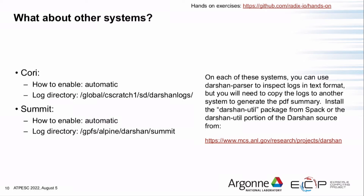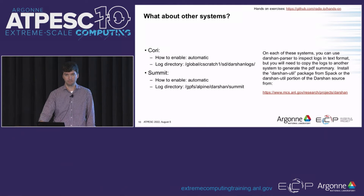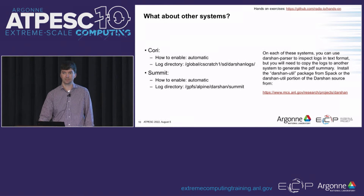For other systems like Cori and Summit, Darshan is already on and enabled by default with slightly different log file locations. On all these systems you can use the tool darshan-parser to dump all log file contents in text format. The Darshan job summary Perl script may require some additional setup to get the proper Perl dependencies configured.